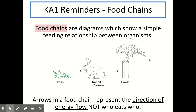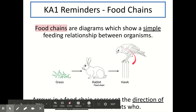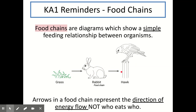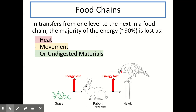Just a little reminder about Key Area 1 when we covered food chains. Food chains are diagrams which show a simple feeding relationship between organisms, just like you can see in this diagram. The grass is consumed by the rabbit and the rabbit is consumed by the hawk. Remember, the arrows in a food chain represent the direction of energy flow, not who eats who.